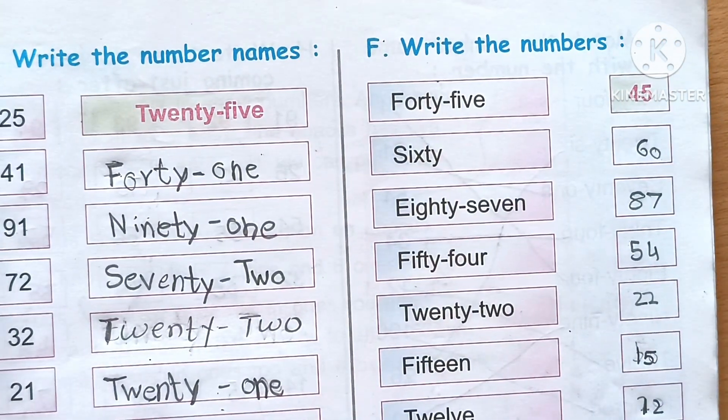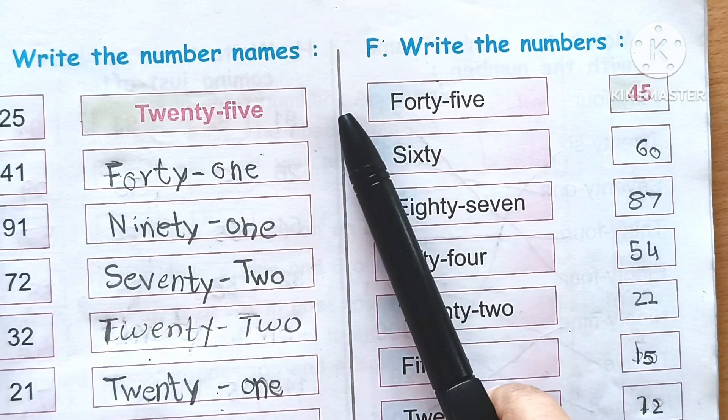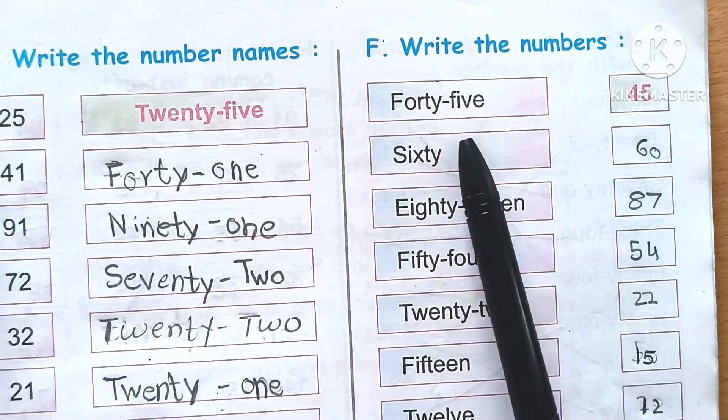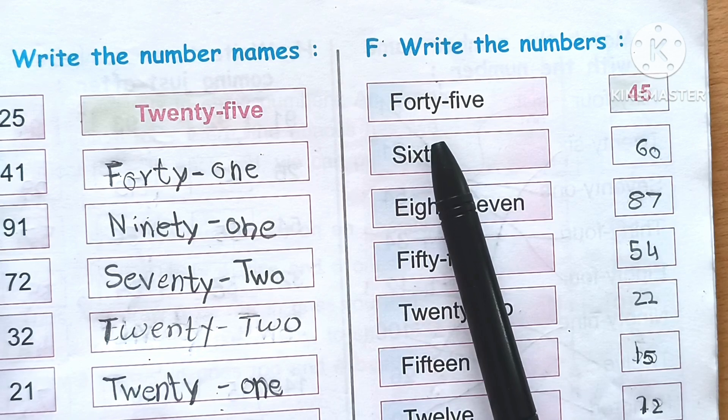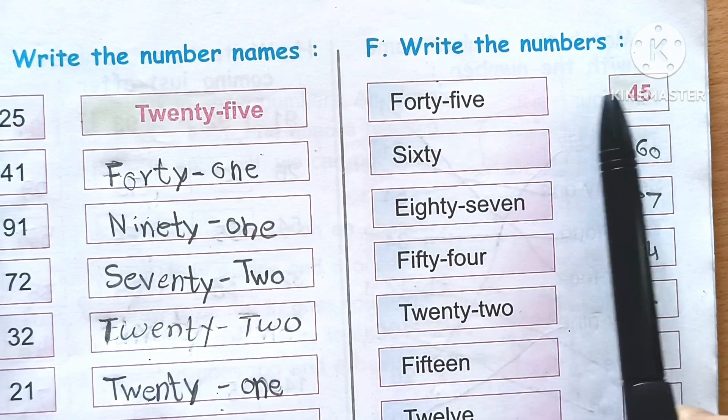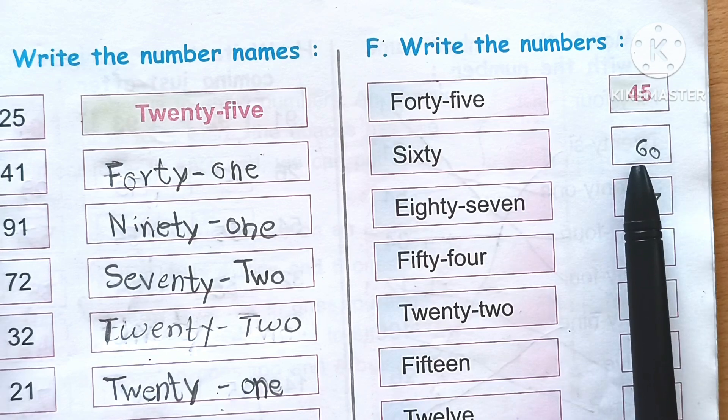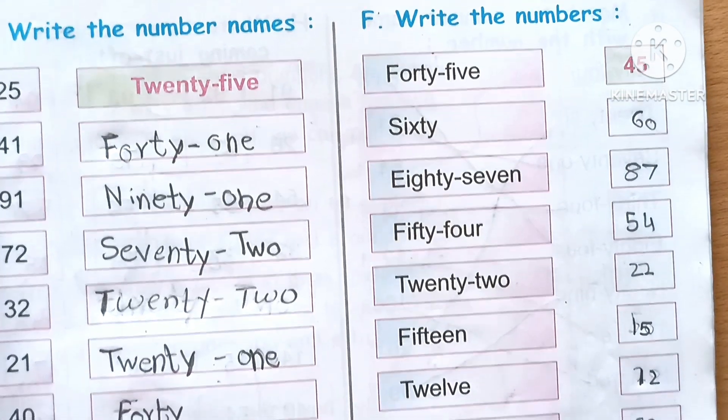Write the number names and numbers. This will be easy. For example, forty-five - you have to write the spelling and of course the number. So you can easily do this.